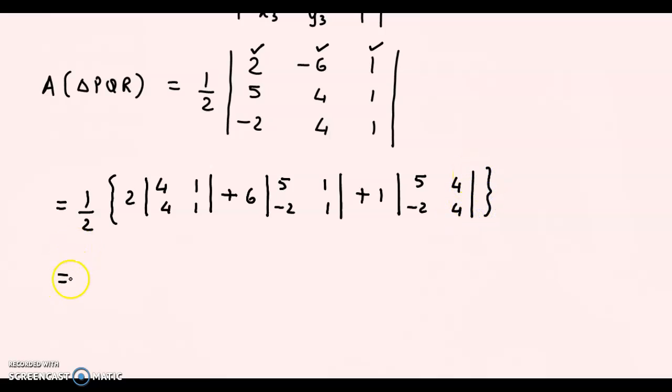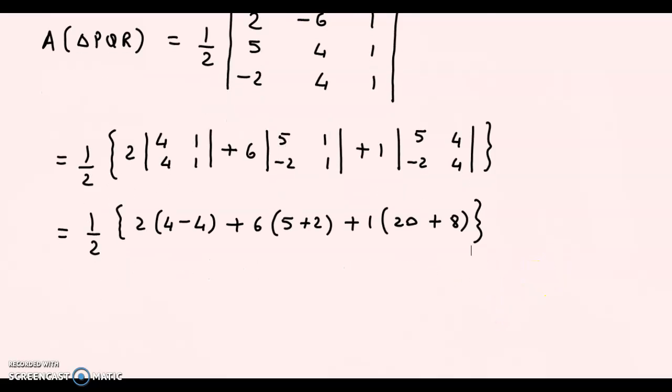Let us simplify further. We have one-half times: 2 times (4 - 4), plus 6 times (5 + 2), plus 1 times (20 + 8). So, 4 minus 4 is 0, so 0 times 2 is 0. 5 plus 2 is 7, times 6 is 42. 20 plus 8 is 28 times 1, that's 28.